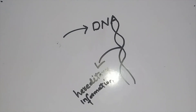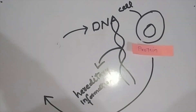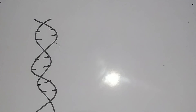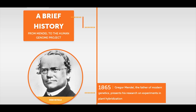DNA is a molecule which has hereditary information and is inside the nucleus. DNA is composed of ribose sugar, phosphate group, and nitrogenous bases. All human beings have 99% the same DNA, but the remaining 1% difference is what makes us different from each other.